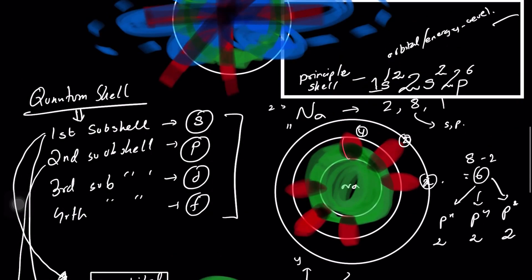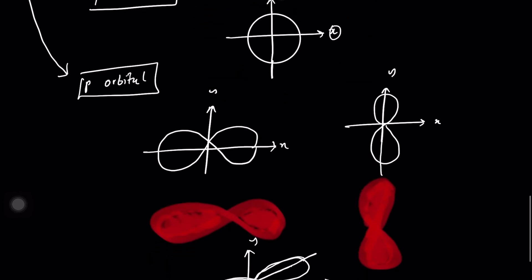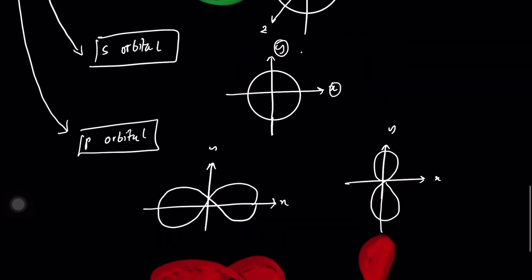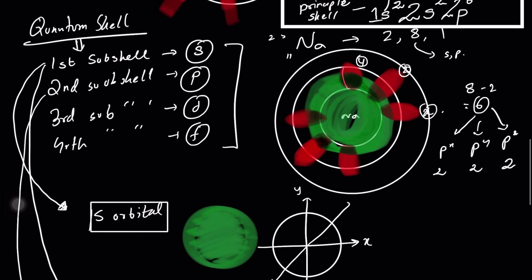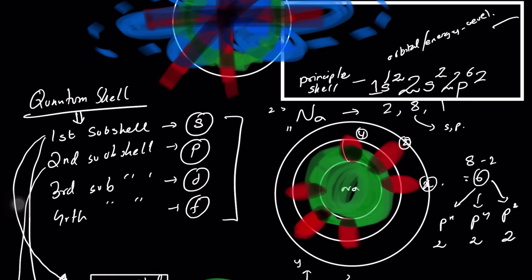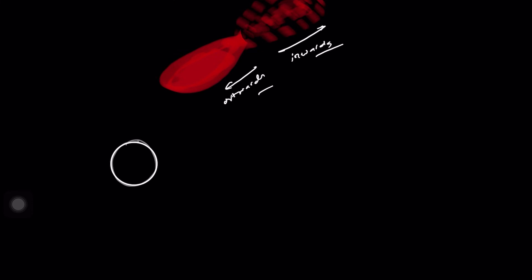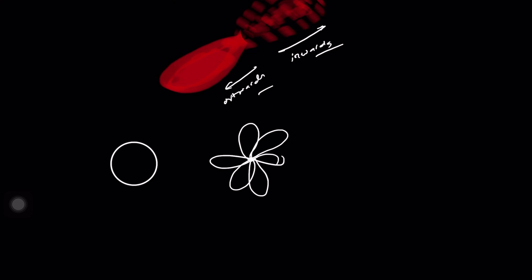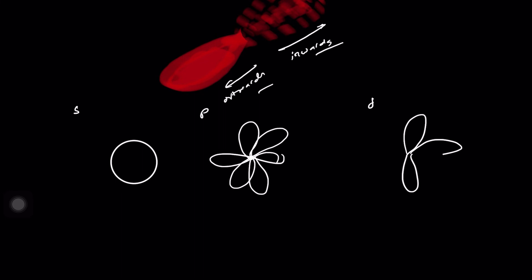Finally we go to the third shell, which would also bring in the D orbitals. But sodium doesn't have enough electrons to fill the D orbital — it only has one electron left. So it fills up an S orbital with just one electron. The third shell has S orbitals, all three P orbitals, and D orbitals.